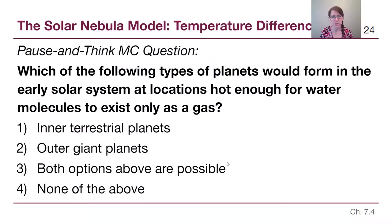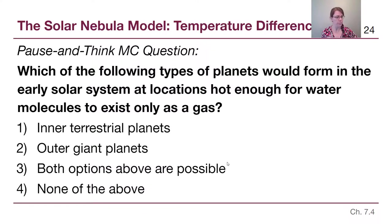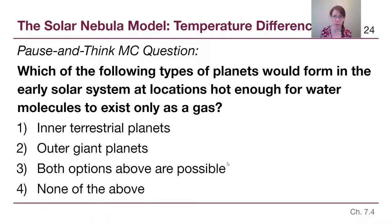Pause-and-think question: which type of planet would form at locations hot enough for water molecules to exist only as gas? The answer is the inner, terrestrial planets — they formed where ices were unavailable as building blocks, so they stayed small because they didn't have water ice or other ices to build with.